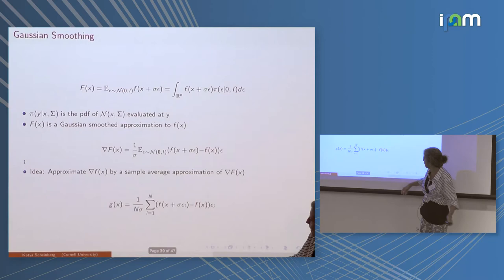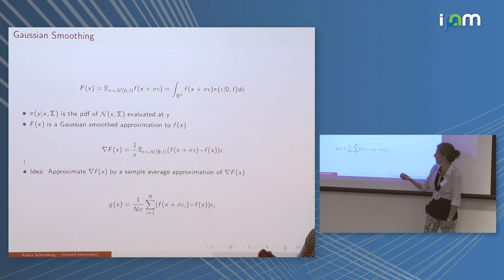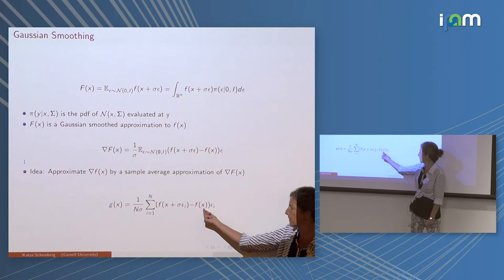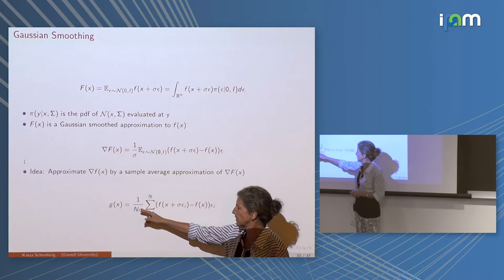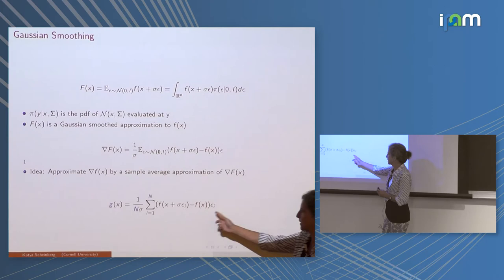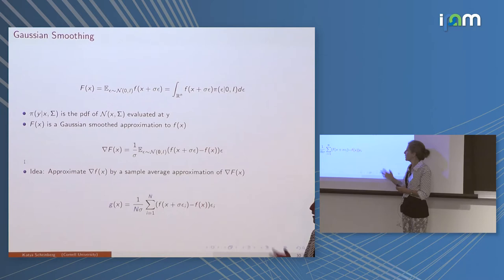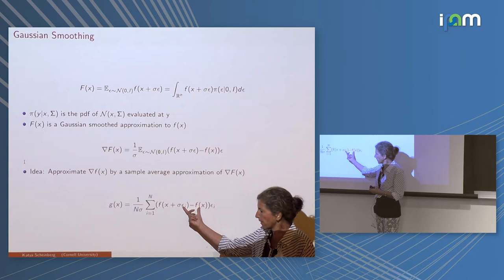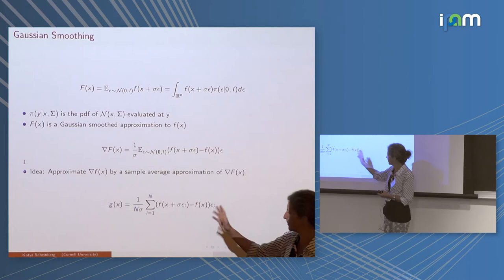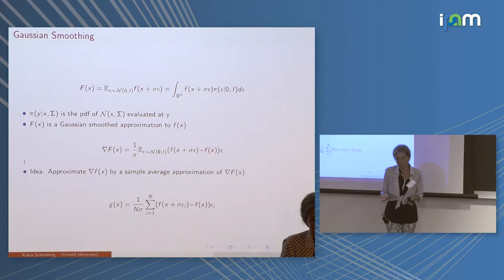A small change converts the formula to essentially finite differences: take x, compute finite differences in random directions, sum them up, and you have your gradient. The variance of this estimate does not blow up when sigma goes to zero — that's all good. Unlike stochastic gradient in machine learning, the variance here actually goes to zero when the gradient goes to zero, which is nice. However, what should n really be?